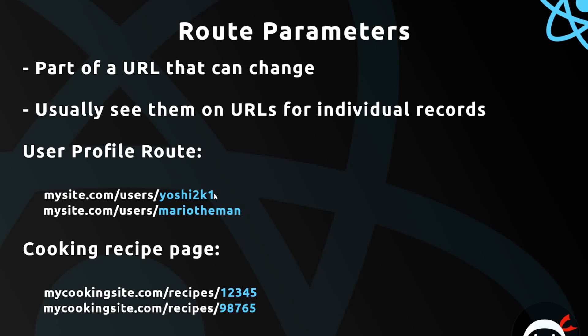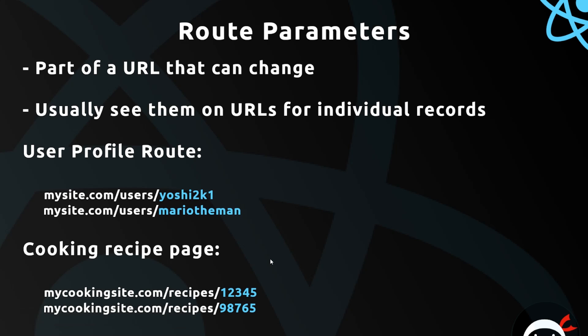Another example would be a cooking recipe page: mycookingsite.com/recipes/ then the ID for that recipe. We could have loads of different IDs and they're all showing the same page layout, the same components in a React application, but inside those components we're showing different data based on the URL — based on the ID, username, slug, or whatever else is the route parameter. These changing parts are the route parameters.